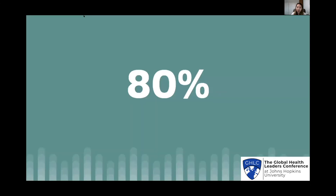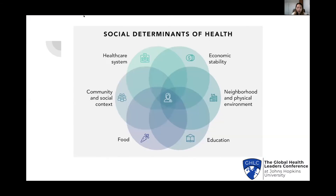Social determinants of health subjectively contribute to 80% of our health outcomes. Pandemics are not really an individual problem but largely a social problem. Data points for these SDOH are critical predictors of the outcome of a pandemic for an individual, a community, and a society as a whole. This graphic shows a visual overview of the aspects included in the social determinants of health, such as healthcare system, economic stability, education, food, and more.